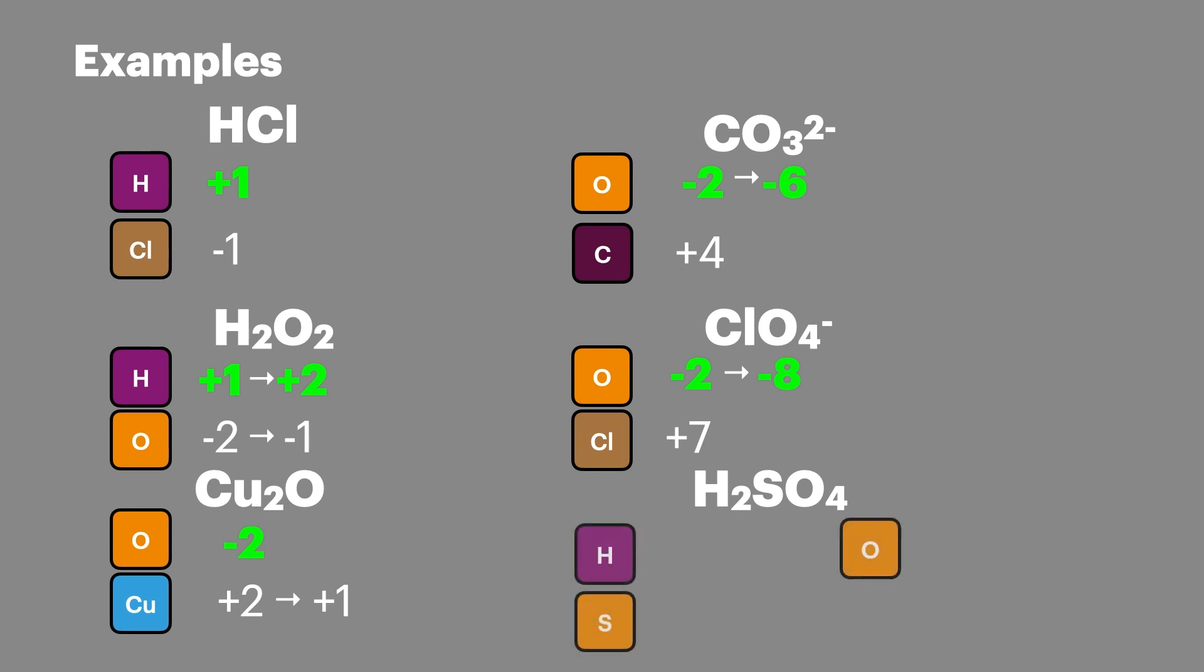And then finally we're going to look at sulfuric acid. We know hydrogen here is plus one and there's two of them which gives us plus two. We also know that oxygen here is minus two. There are four of those and that gives us minus eight which leaves sulfur here with an oxidation state of plus six.